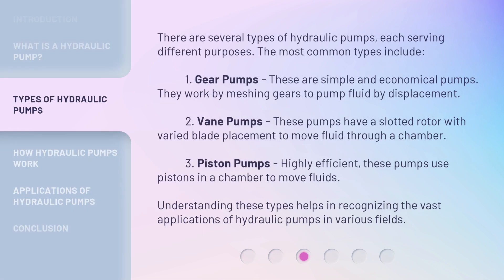There are several types of hydraulic pumps, each serving different purposes. The most common types include: 1. Gear Pumps — these are simple and economical pumps. They work by meshing gears to pump fluid by displacement. 2. Vane Pumps — these pumps have a slotted rotor with varied blade placement to move fluid through a chamber.